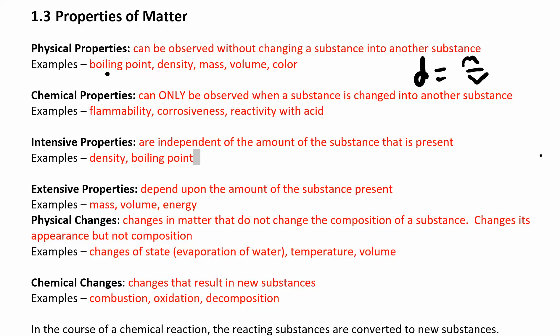Boiling point is also a physical property. That gets a little confusing because when you're boiling something, you're going from a liquid to a gas. Suppose you have liquid water — now you're turning it into gaseous water. It's a physical change, a physical property. You're not creating anything new; you're just changing the state of matter. So freezing point and boiling point are all just physical properties because you're not making anything new — you still have water.